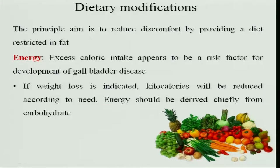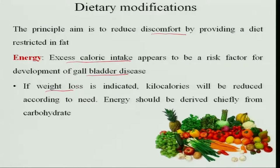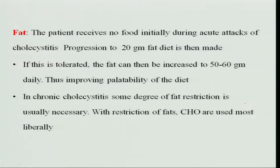The principal aim of dietary modification is to reduce discomfort by providing a fat-restricted diet, since fat intake triggers abdominal pain. The first step is to restrict fat in cholecystitis and cholelithiasis. Excess calorie intake is also a risk factor, as it causes obesity. If weight loss is indicated, energy intake should be reduced and exercise encouraged, with energy derived mainly from carbohydrates and not fats. During the acute condition, the patient initially receives no food, and fat is then progressively introduced at 20 grams per day.